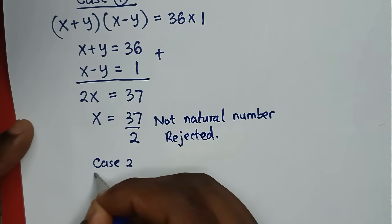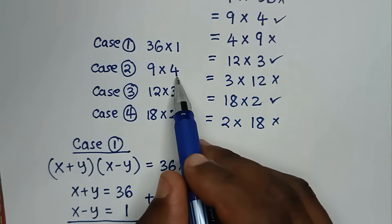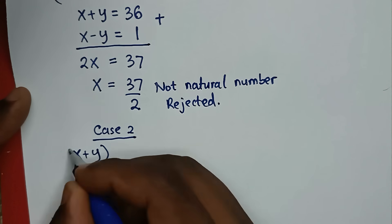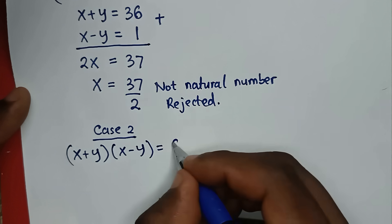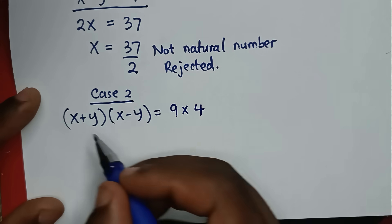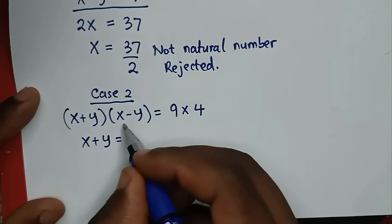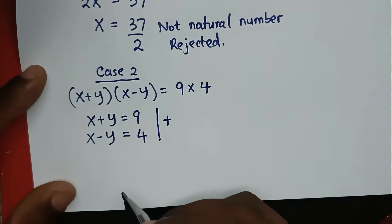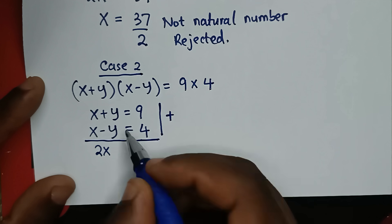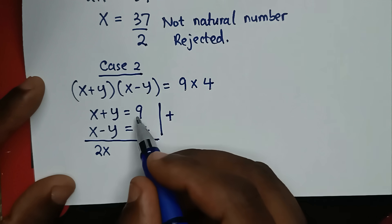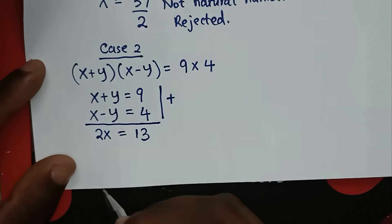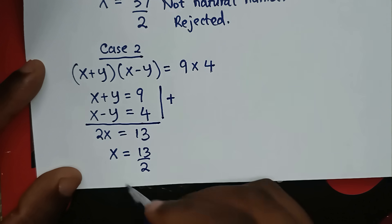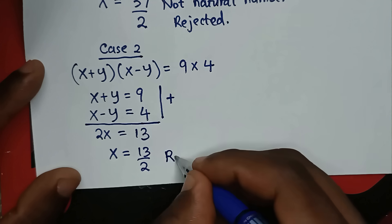From Case 2: (x plus y) times (x minus y) equals 9 times 4. So x plus y equals 9 and x minus y equals 4. Adding these two equations: 2x equals 13, so x equals 13 divided by 2. This is a fraction, so it is not a natural number. This solution is rejected.